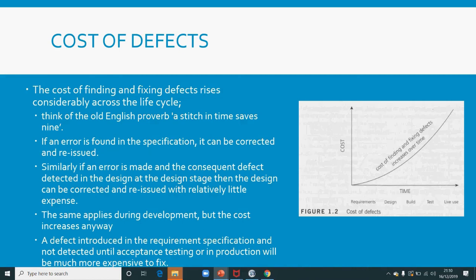If the tester in QA doesn't find it either and it goes into production, it becomes even more expensive to fix. So it's good practice to find bugs as early as possible. That's why there is a notion in the industry that a tester should be employed as soon as possible when a project starts.